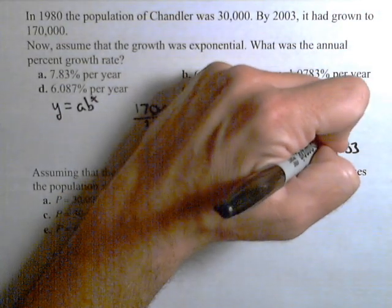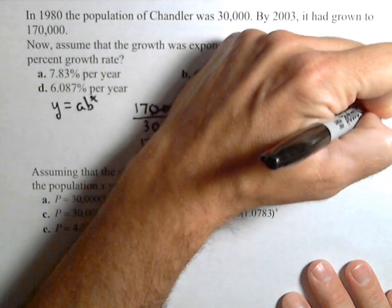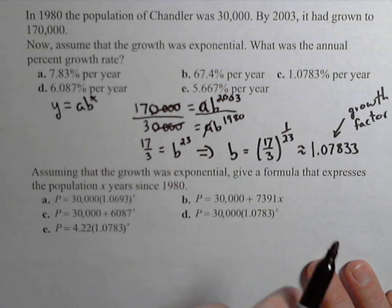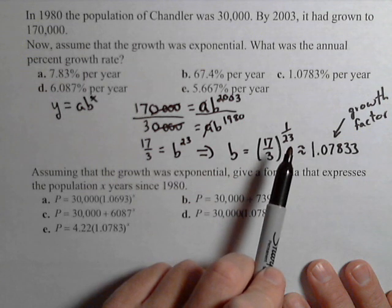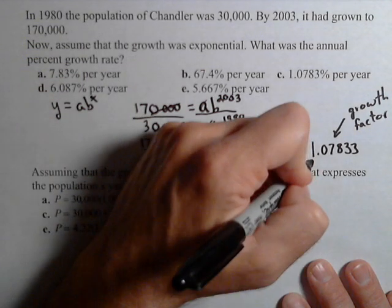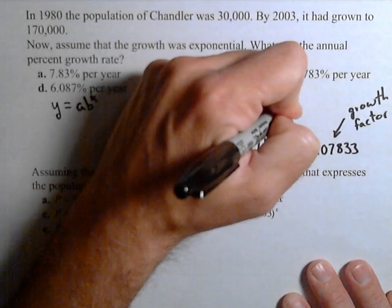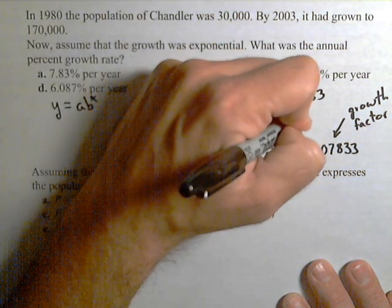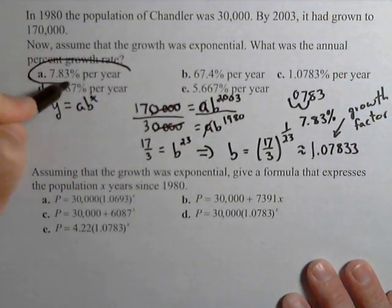That's my growth factor, not my growth rate. Okay? Because that's my b, that's my base of my exponential. To turn a growth factor to a growth rate, you subtract 1 and multiply by 100 to turn it into a percent. So, subtracting 1 will give us 0.07833, multiply by 100, we'll move that decimal point two places, and we get 7.83 percent. So our annual growth rate is 7.83 percent per year.